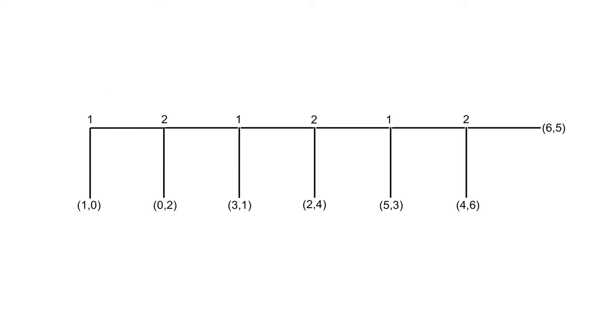Payoffs are represented in a game tree. I'll now illustrate the extensive form with a game called the centipede game. The centipede game has six decision nodes. At each node, a player can take and end the game, or they can pass, increasing the total payoff. The other player then has a move.